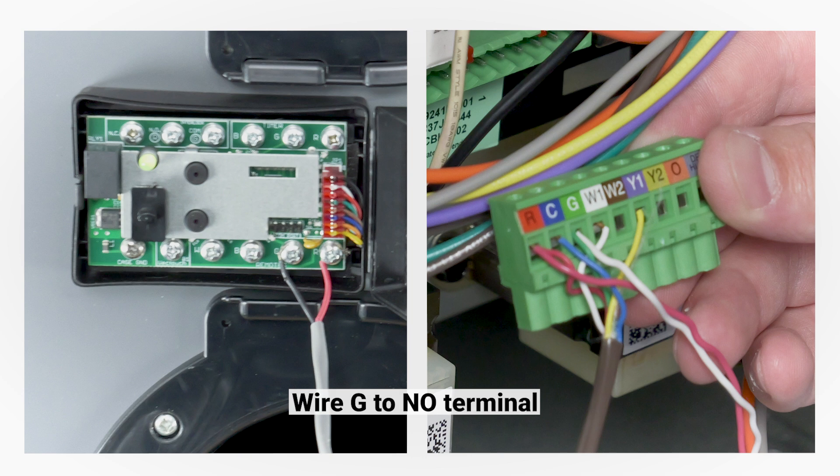Wire the G on the furnace or air handler to the NO terminal on the ventilator. Wire the R terminal on the furnace or air handler to the COM terminal on the ventilator.